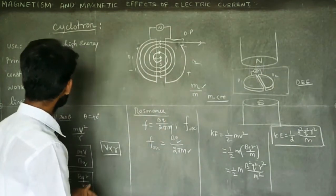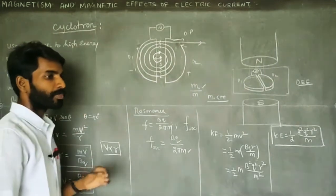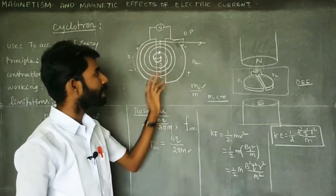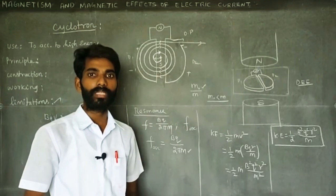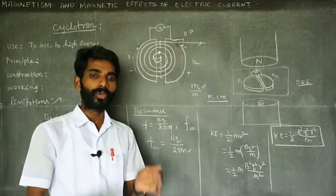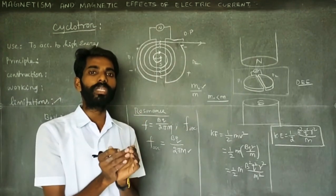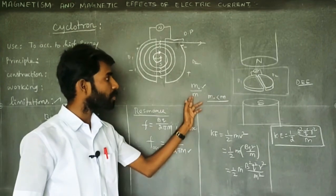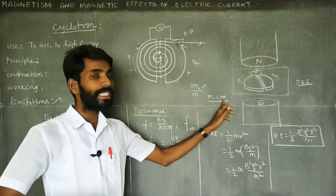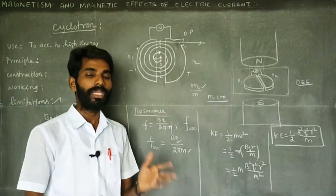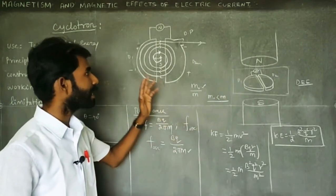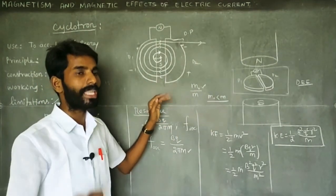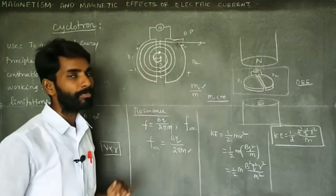The second limitation of the cyclotron is that if the particle is an electron — which has very less mass, much less than a proton — it will accelerate very quickly because of the small rest mass, causing the relativistic effect to appear sooner.